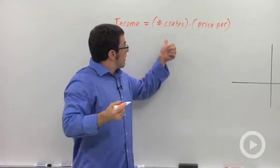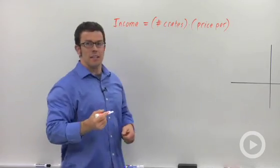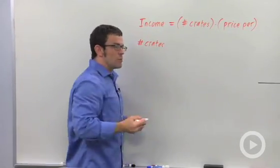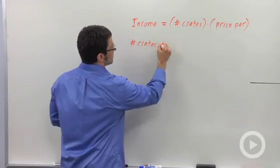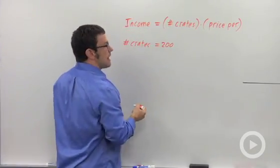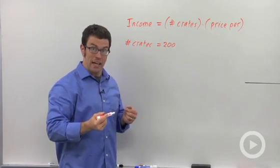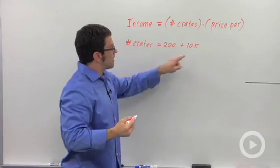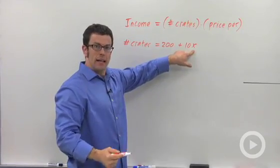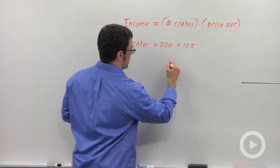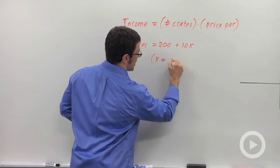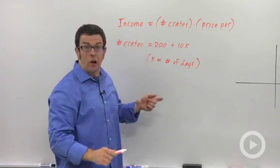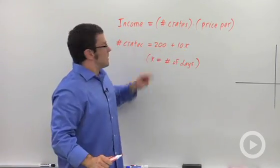First, I need to get a function for the number of crates. The problem says she has 200 crates and can harvest an additional 10 per day. I'll write that as 200 plus 10x, where x is the number of days she waits. For example, if she doesn't wait at all, zero days, she'll have 200 crates.